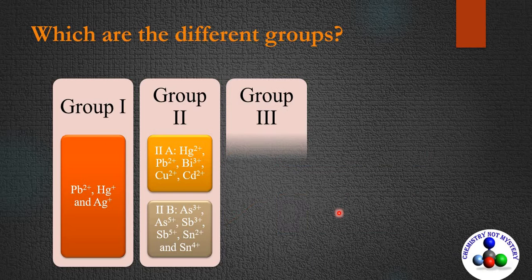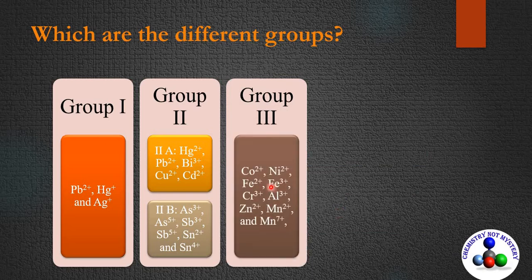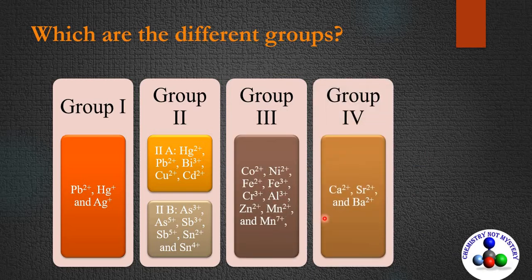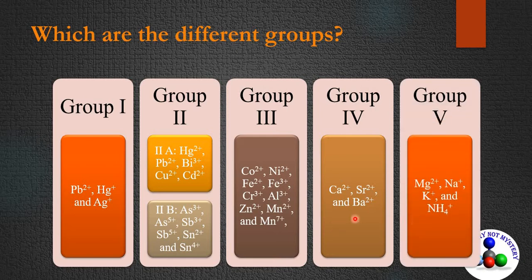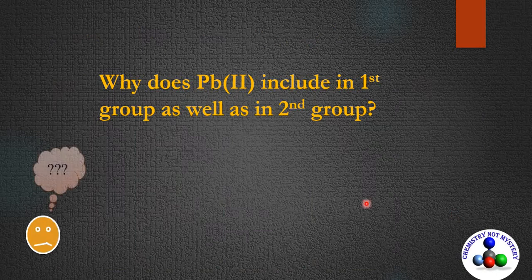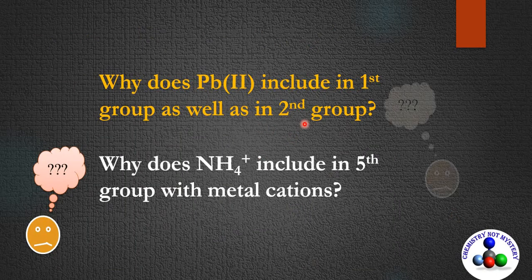The third group has the following cations, the fourth group has three metal cations, and the fifth group has the following cations. You may notice that the lead(II) cation is common between the first group and the second group, and the ammonium ion is included in the fifth group along with metal cations. Why does lead(II) appear in both the first and second group, and why does the ammonium ion appear in the fifth group with metal cations?